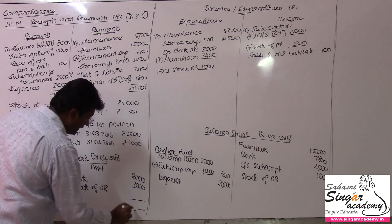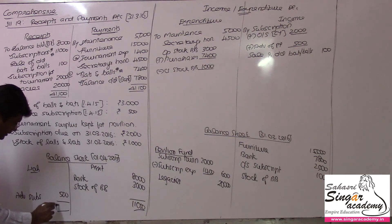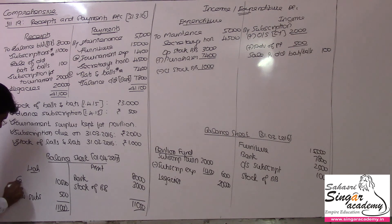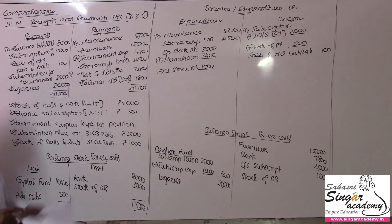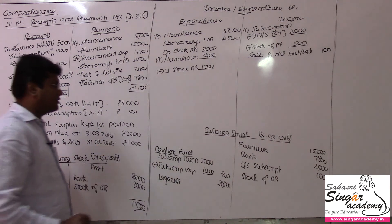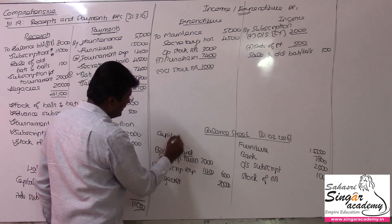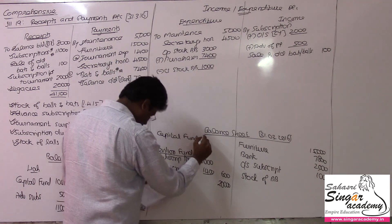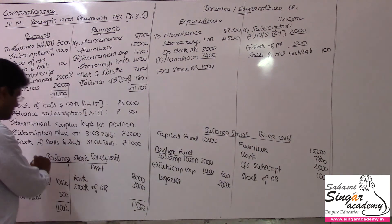The balancing figure gives us the capital fund — value 11,000. So 10,500 is the capital fund or general fund. This capital fund will go to the opening side of the balance sheet as opening capital fund, value being 10,500.